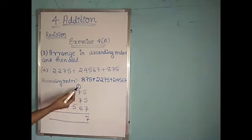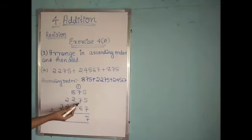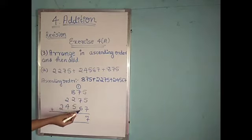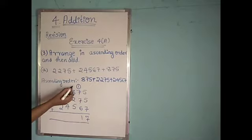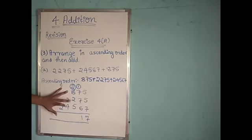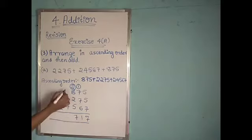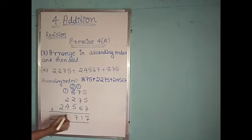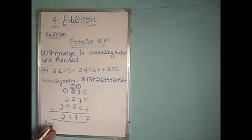1 plus 7 is 8. 8 plus 7 is 15. 15 plus 6 is 21 — so I will write 1 here and carry 2. Then 2 plus 8 is 10, 10 plus 2 is 12, 12 plus 5 is 17 — so I will write 7 here and carry 1. Then 1 plus 2 is 3, 3 plus 4 is 7. Then 2. So the answer is 27,717.